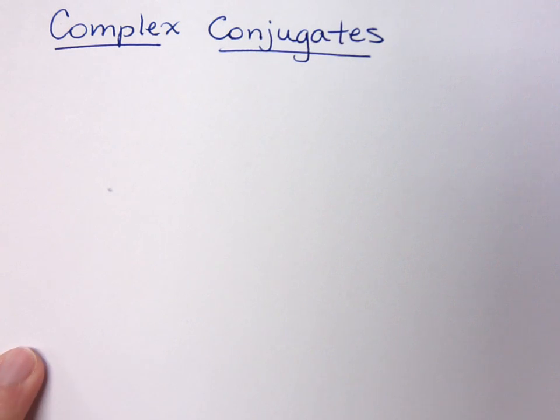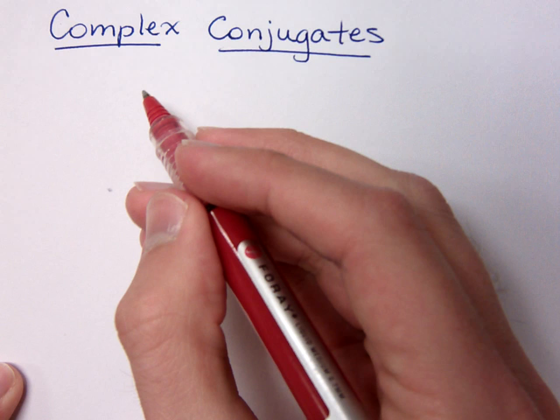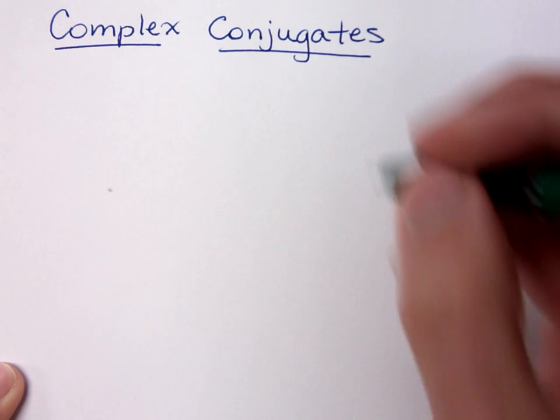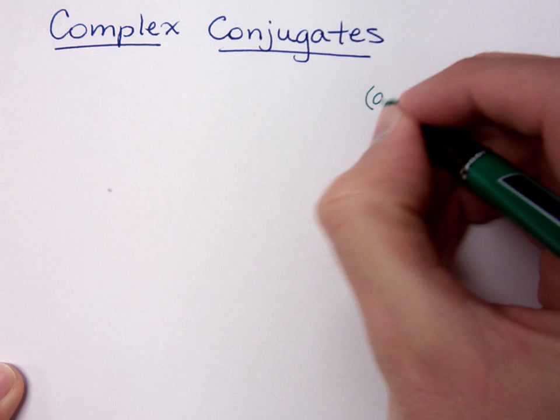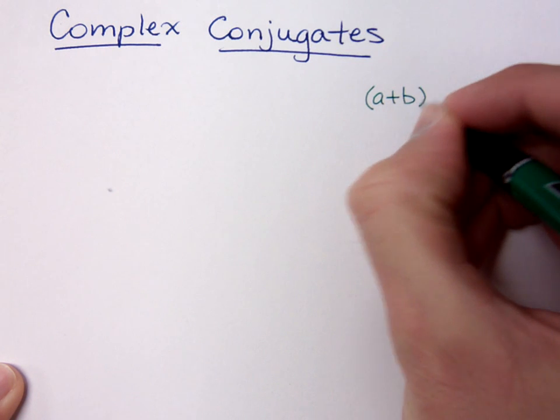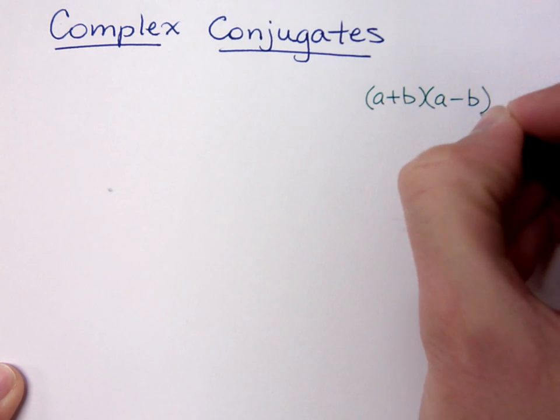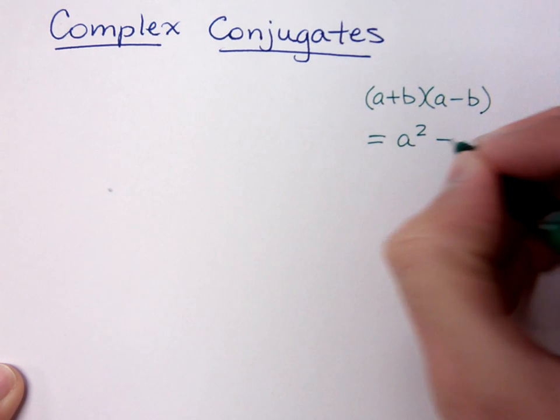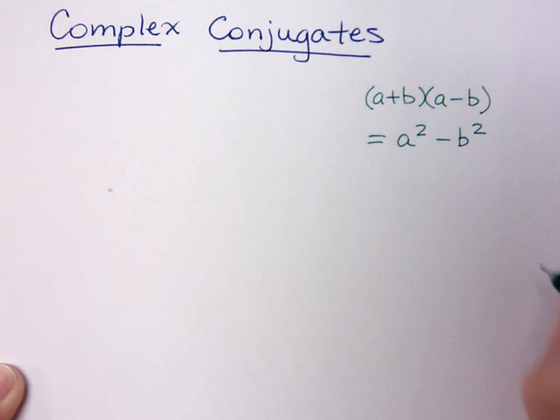One of the most important concepts that we have with complex numbers is this idea of complex conjugates. Now, back in the earlier days, we would have had these guys as conjugates: a plus b times a minus b. And this would have given you the difference of squares, a squared minus b squared.